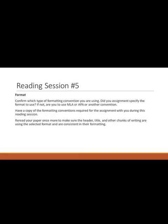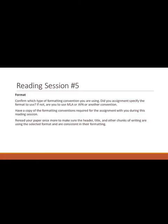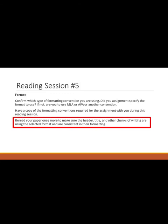Reading session number five: read for format. Get a copy of the conventions you are working with — APA, MLA, Chicago style, or whatever. Have them with you, review them, and then go through and one by one make sure you have met all the conventions. Confirm which type of formatting conventions you are using, and re-read your paper to make sure the header, title, and other elements are using the selected format and are consistent.